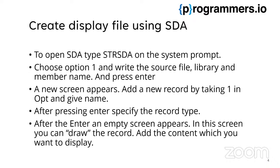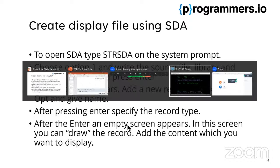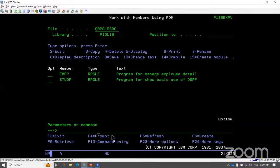To create a display file using the SDA command, first I'll show all the steps then the practical part. To open SDA, type the STRSDA command on the prompt. After that, choose option one and enter the source file, library, and member name. After pressing enter, a new screen appears where we add the record and give it a name. After entering the record, we specify the record type, and then we get an empty screen where we can draw.